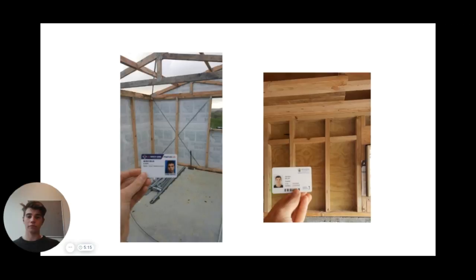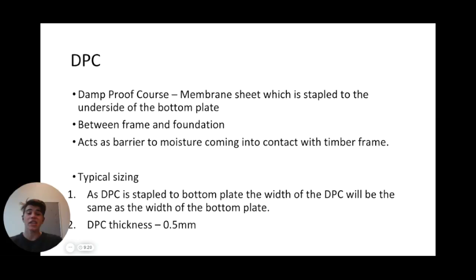DPC, which stands for damp-proof course, is a membrane sheet stapled to the underside of the bottom plate between the frame and the foundation, or between the batten and the masonry wall. It prevents absorption of moisture from concrete ground or soil, ensuring the framing unit, insulation, and internal wall lining remain dry. According to NZS 4202, DPC is measured in meters with the approximate width stated. The typical width depends on the bottom plate or batten width: 100mm, 150mm, or 200mm, with a thickness of 0.5mm.